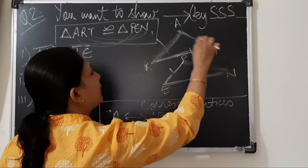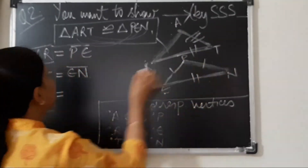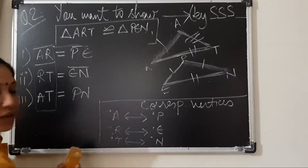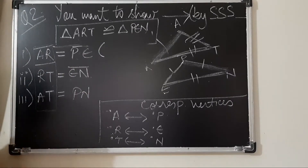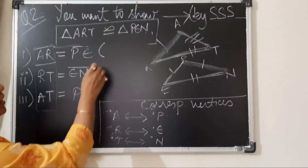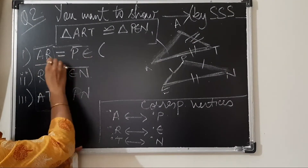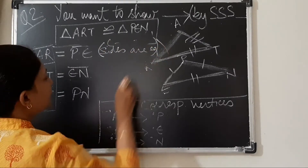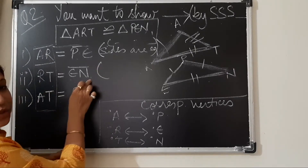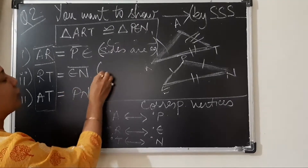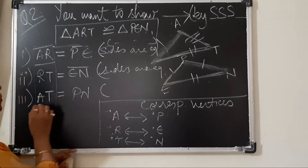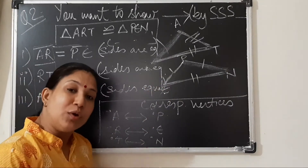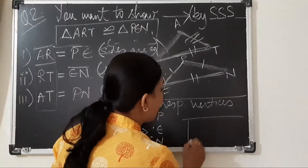Same way, the third side: AT and PN. Write down that AT is equal to PN. Now we also write down the reason. Why is AR equal to PE? They are corresponding sides which are equal. Same way, RT is equal to EN — corresponding sides are equal. And AT is equal to PN — again corresponding sides. Because to prove congruence, we take any three congruent parts — three sides, or combination of sides and angles — of one triangle equal to the corresponding parts of another.